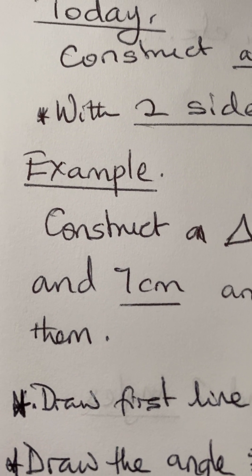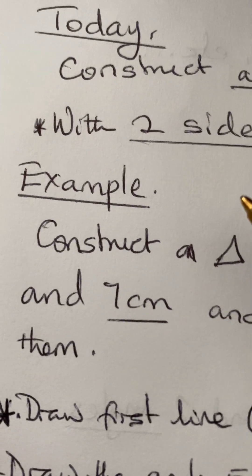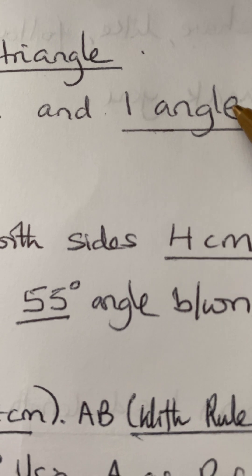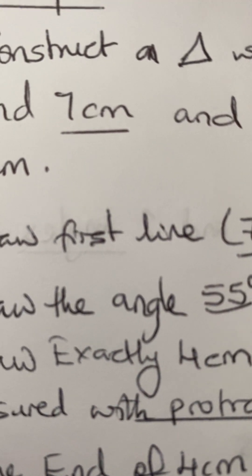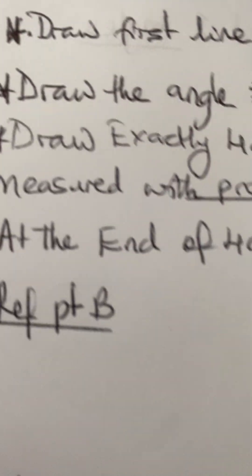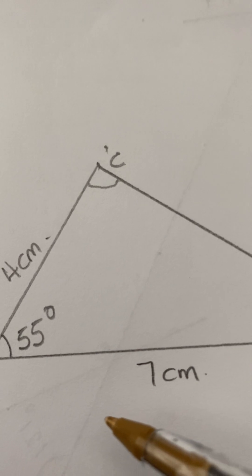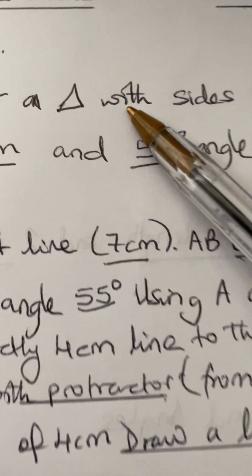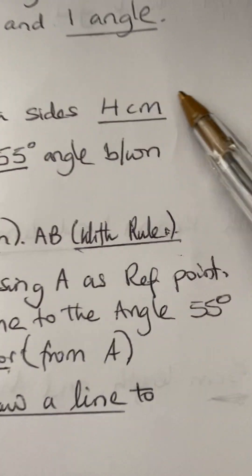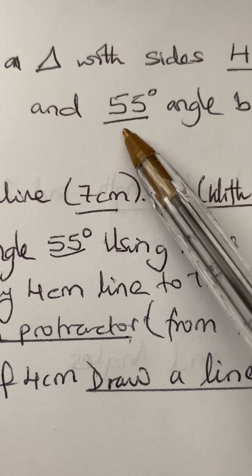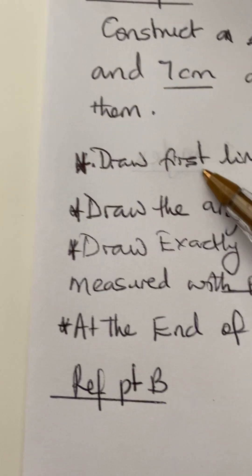Today we are still constructing triangles. Yesterday we were given two angles and one known side; today we've been given two sides and one angle. How do you do that? I'm going to talk you through it and show you. So construct a triangle with sides four centimeters and seven centimeters and angle 55 degrees between them.